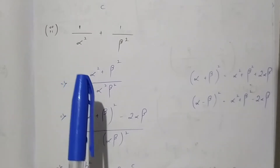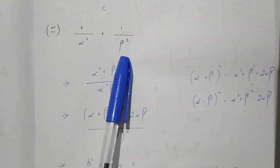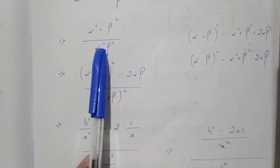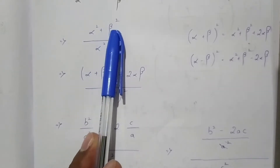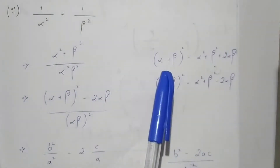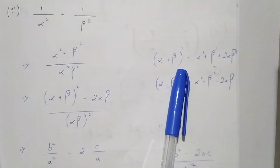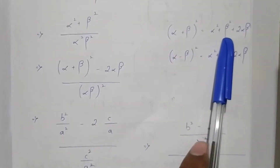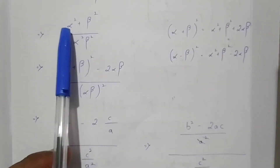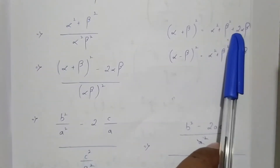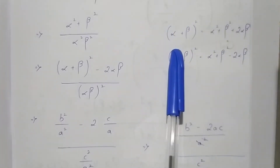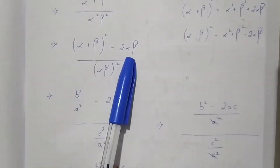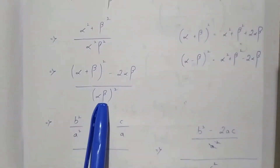Now coming to the second expression: 1 by alpha squared plus 1 by beta squared. As usual we take LCM as alpha squared times beta squared, and we get the numerator as alpha squared plus beta squared. We use the formula (a + b)² = a² + b² + 2ab, and rearranging, alpha squared plus beta squared equals (alpha plus beta) whole squared minus 2 alpha beta. So the numerator is (alpha plus beta)² minus 2 alpha beta and the denominator is (alpha into beta) whole squared.